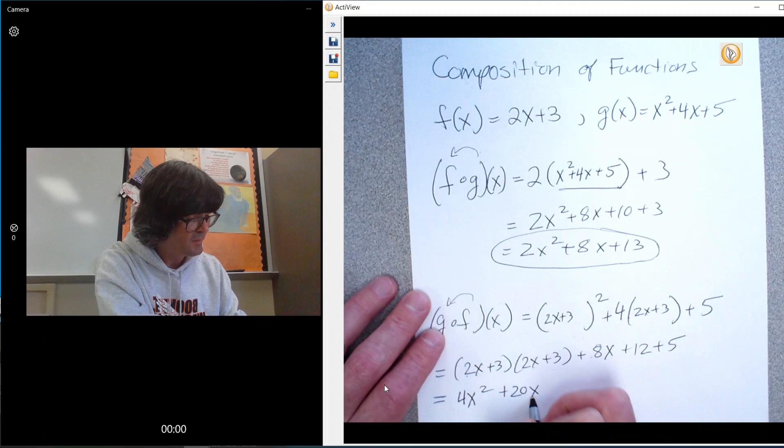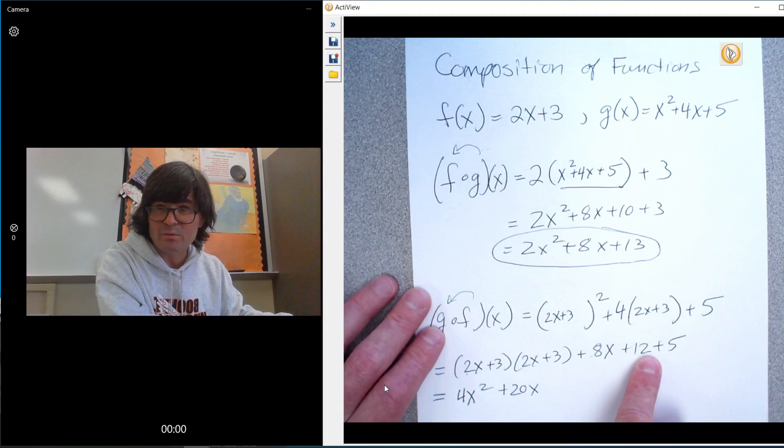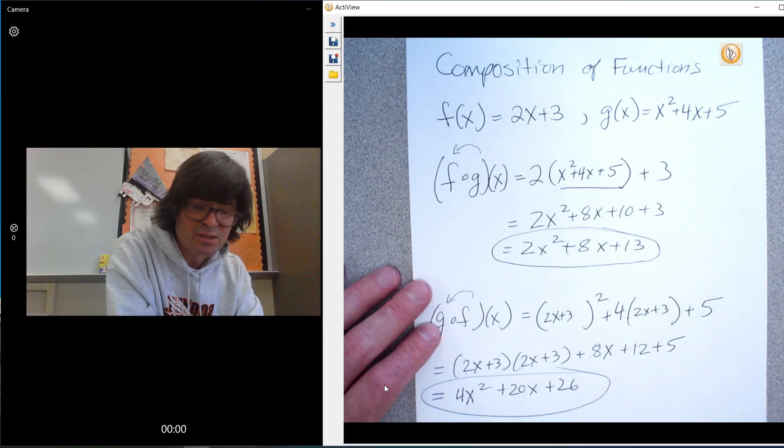3 times 3 is 9. Add that to 12, and you get 21. And then 5 more is 26. So that, in a nutshell, is how you do composition of functions.